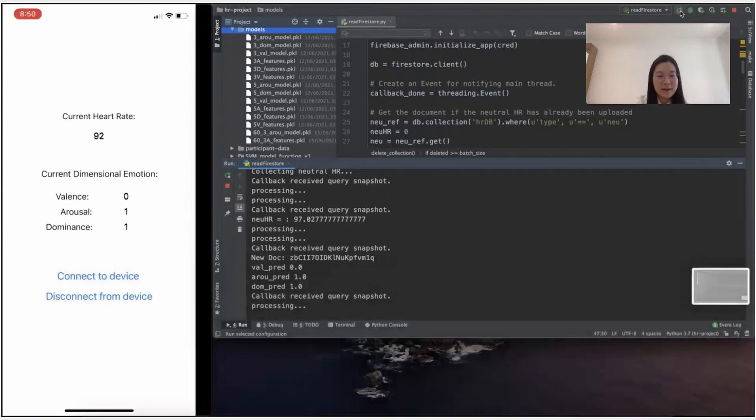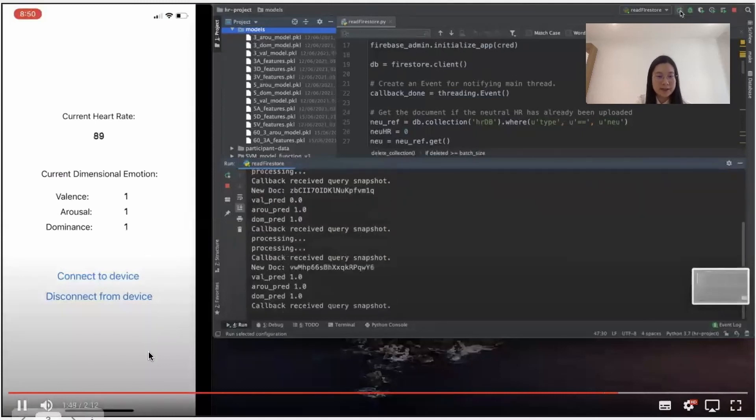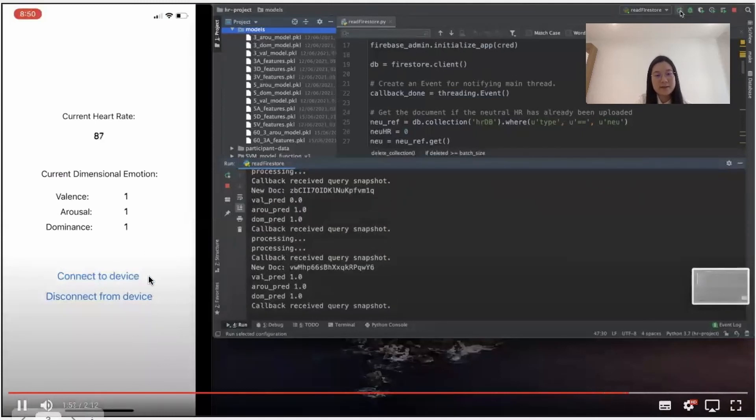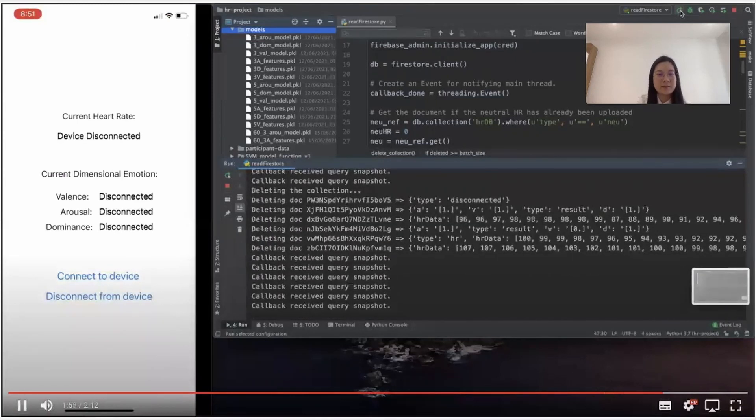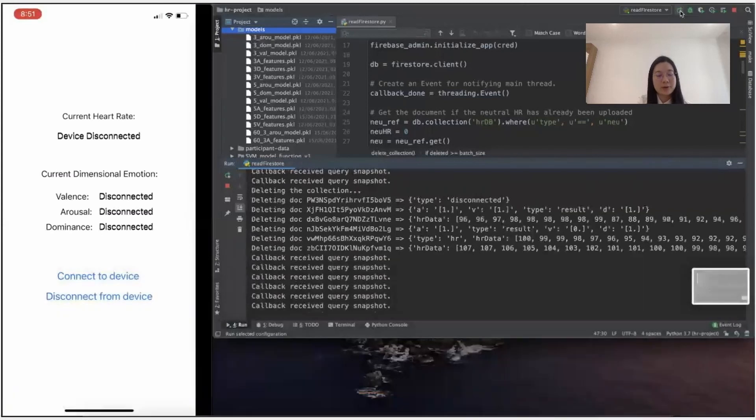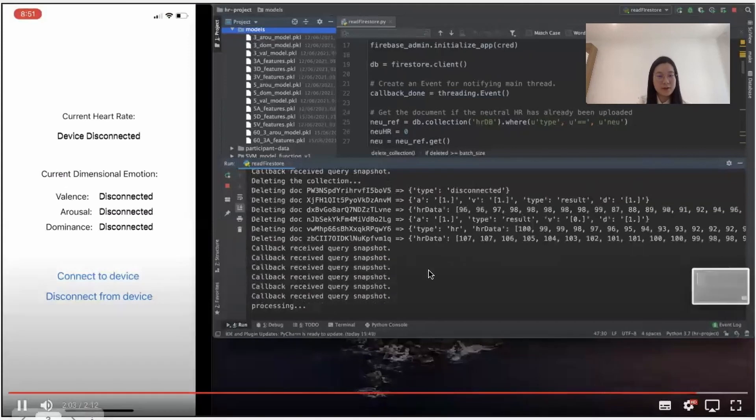And finally, as the heart rate is still considered as personal data, although it's considered low risk, we have designed a deletion functionality. So when the disconnect button is pressed, the app will automatically send an order that basically asks the server to delete all the heart rate data in the database.